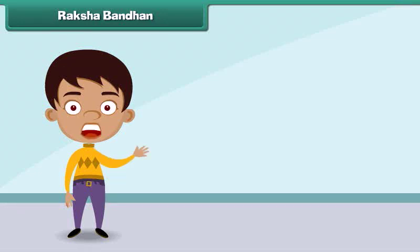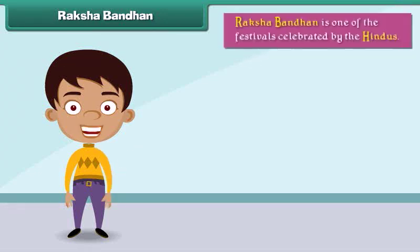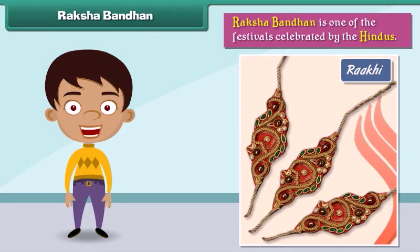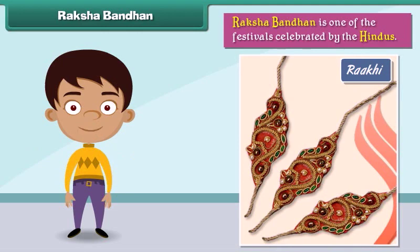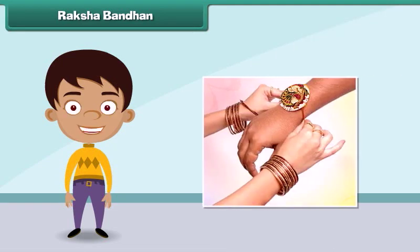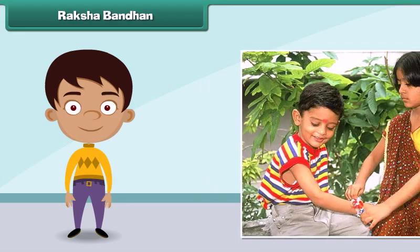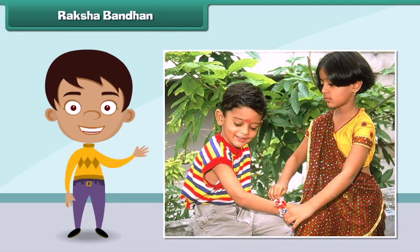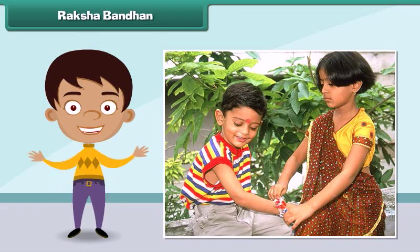Raksha Bandhan is one of the festivals celebrated by the Hindus. On this day, sisters tie rakhis on the wrists of their brothers and pray for their well-being. In return, brothers promise to protect their sisters from all evil.